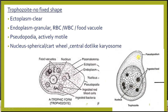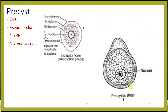The trophozoite nucleus is spherical with a cartwheel shape and a central dot-like karyosome. The second stage is the pre-cyst stage, which is smaller than the trophozoite but bigger than the cyst stage. It is oval in shape, pseudopodia may be present, but there are no RBCs and no food vacuoles.